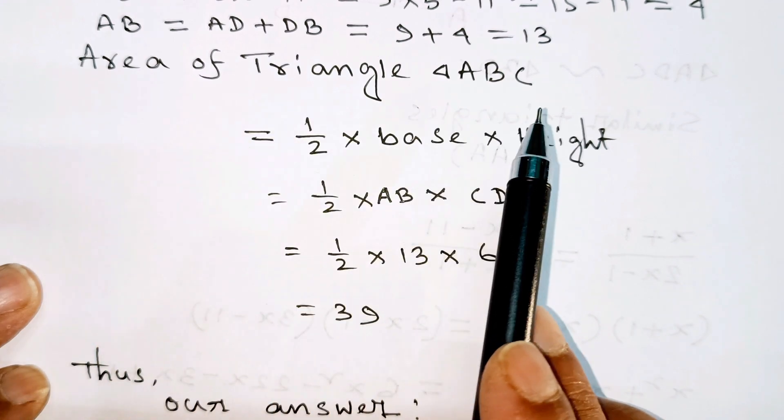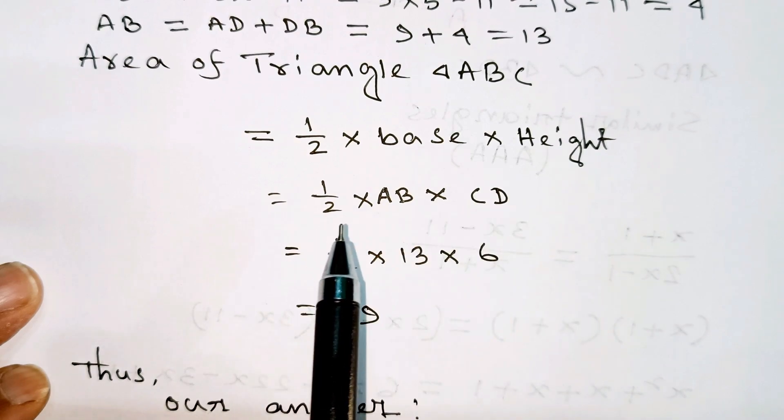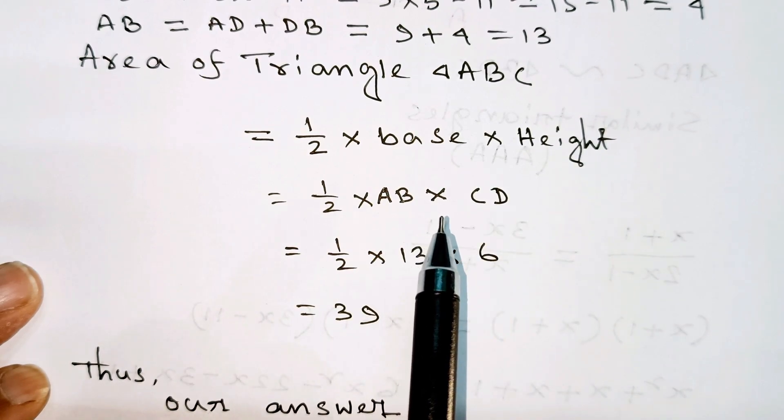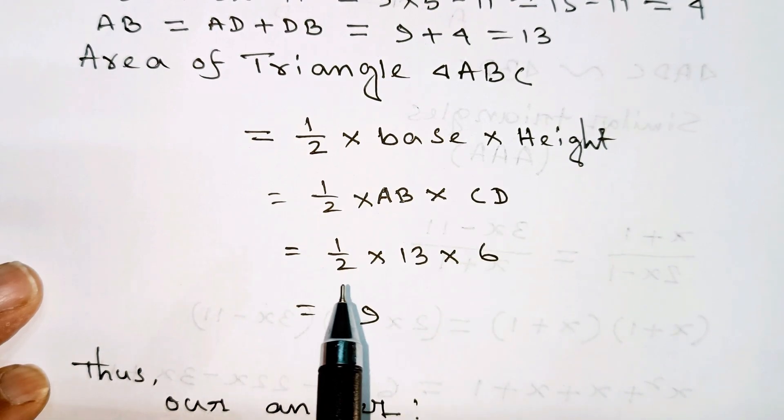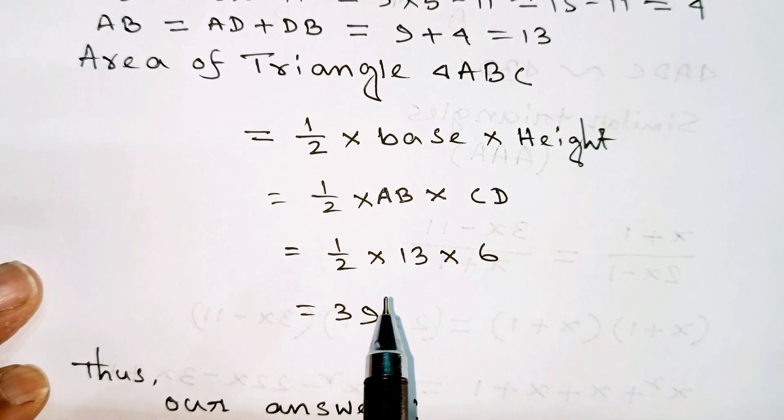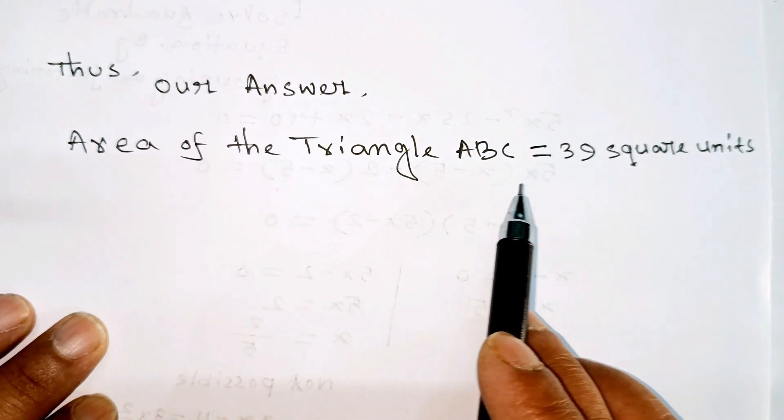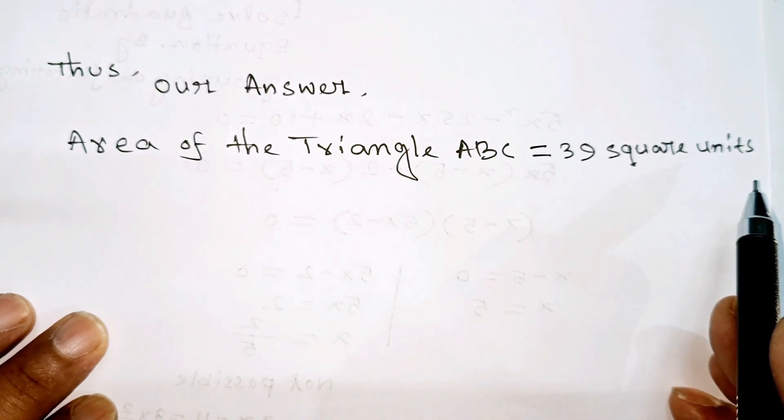Area of triangle ABC equals one half times base times height, which equals one half times AB times CD, equals one half times 13 times 6, equals 39. Thus our answer: area of triangle ABC equals 39 square units.